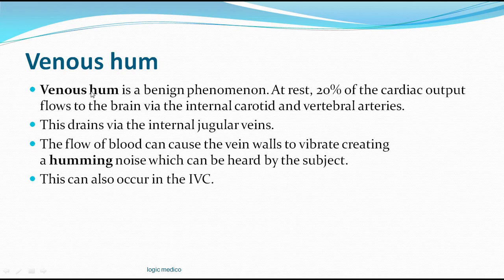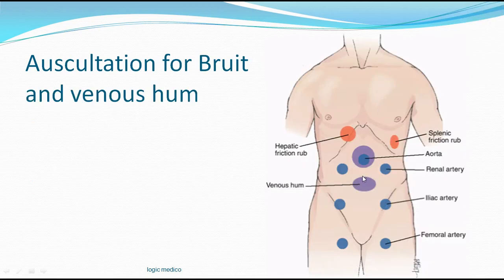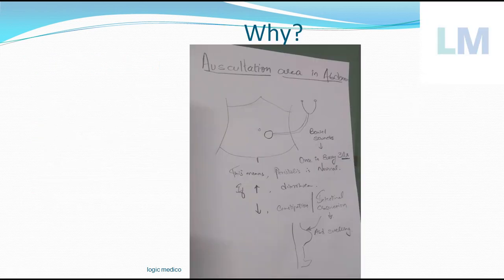Venous hum is a benign phenomenon. At rest, approximately 20 percent of cardiac output flows to the brain via the internal carotid and vertebral arteries, and returns via the internal jugular vein, producing a humming noise. A similar phenomenon can occur in the abdomen through the inferior vena cava. Venous hum is most commonly heard near the umbilical region but can also be heard in the epigastric region.